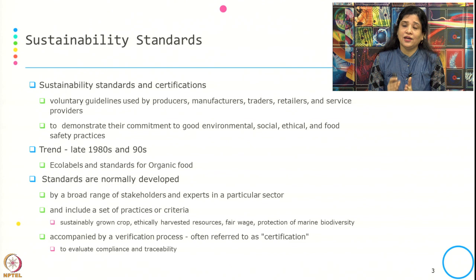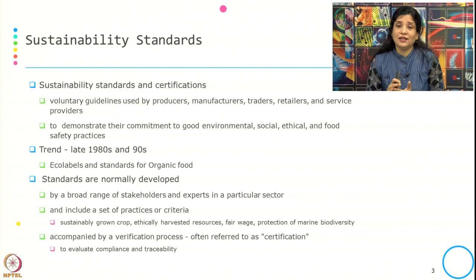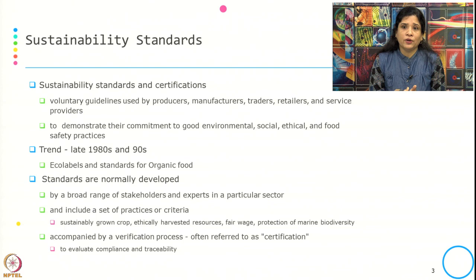And why do they use this? To demonstrate their commitment to good environmental, social, ethical, and food safety practices. If you see, the bottom line for these standards is again the triple bottom line, and apart from this, there are also additional areas of importance like food safety practices, resources, and many other agendas.